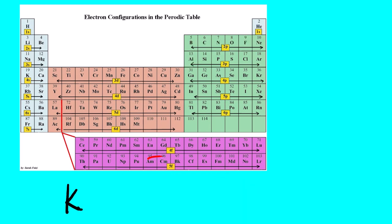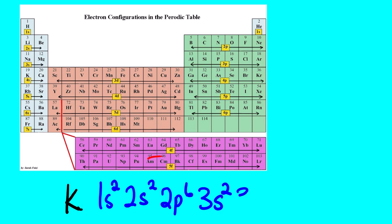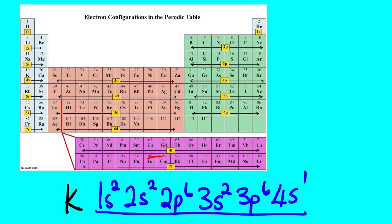Let us look at another example — the electron configuration of potassium, element number 19. We can see that the location of potassium is here. Under 1S we have two: 1S². Under 2S we have two: 2S². Under 2P we have 2P⁶. Under 3S we have 3S². Under 3P we have 3P⁶. And then under 4S we have 4S¹. This is the electron configuration of potassium.